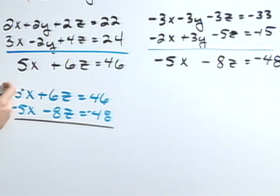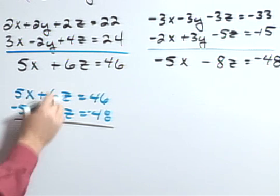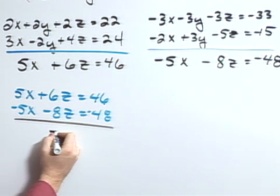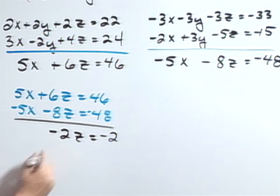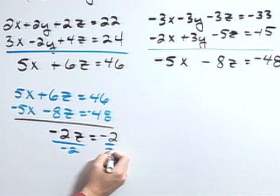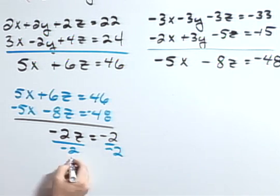The nice thing about this is my x's are already going to drop out because I have a positive 5x and a negative 5x. So combining these gives me negative 2z equals negative 2. Dividing both sides by negative 2, I find that z equals 1.